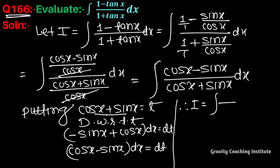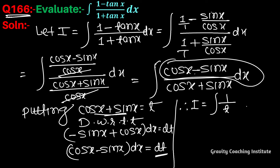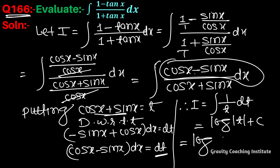So therefore I equals integration of 1/t dt, where t is (cos x + sin x) and (cos x - sin x) dx is replaced by dt. This equals log|t|, and substituting back, the answer is log|cos x + sin x| plus constant.